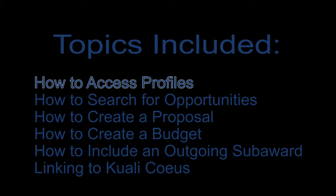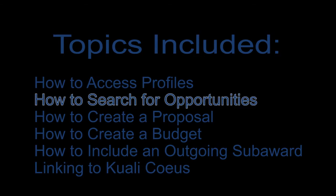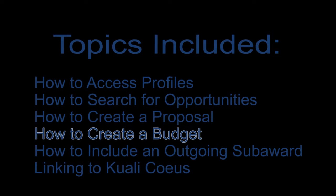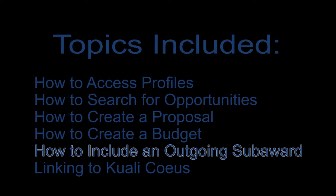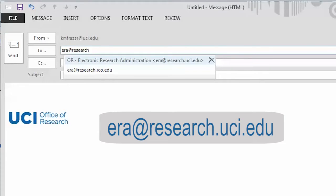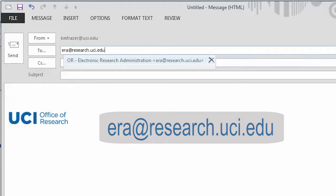This concludes our instructions. Remember, we're always here to help. In this video, we covered accessing and creating profiles, searching for opportunities, creating proposals in Cayuse 424, creating budgets, including outgoing subawards in your proposal, and linking to Cayuse. We believe that Cayuse 424 will make your job easier and improve your chances of submitting error-free applications. Contact us if you need help — one-on-one training by our ERA support team is available. We encourage you to use Cayuse 424 for your next federal proposal submission. Thank you.